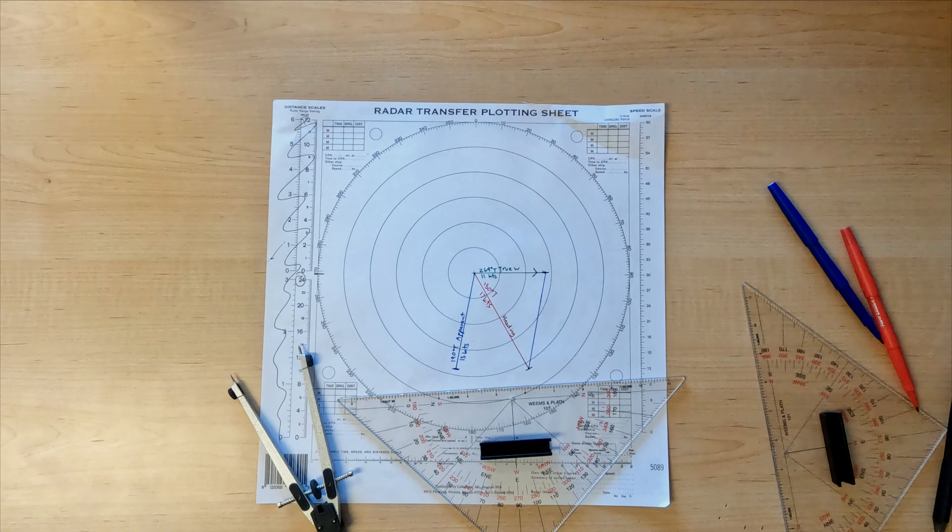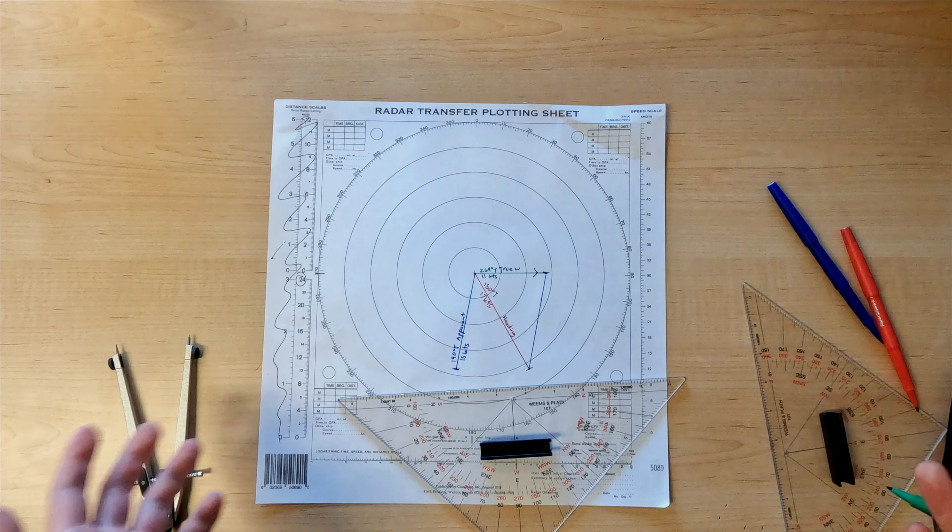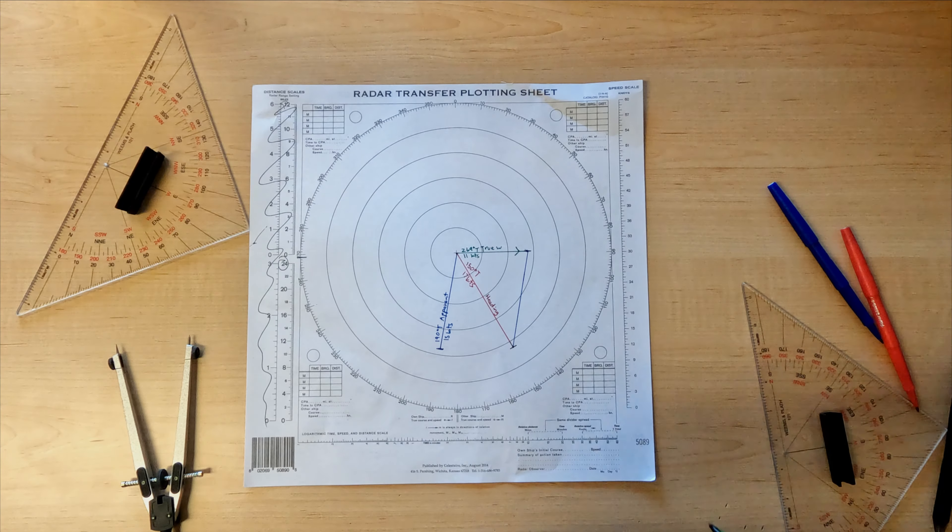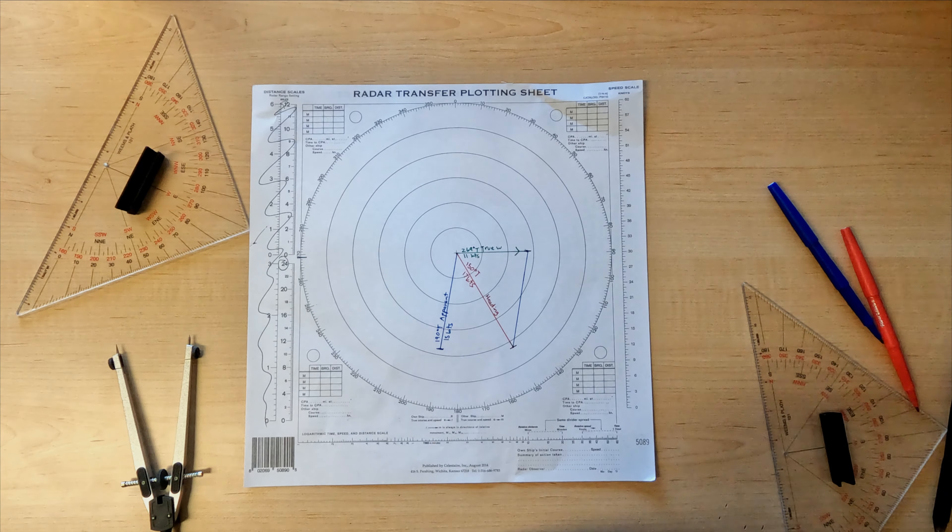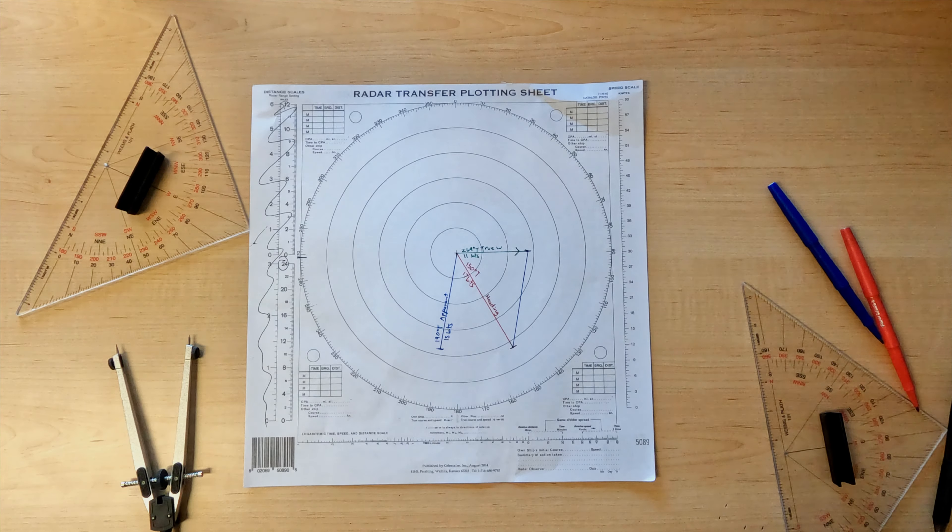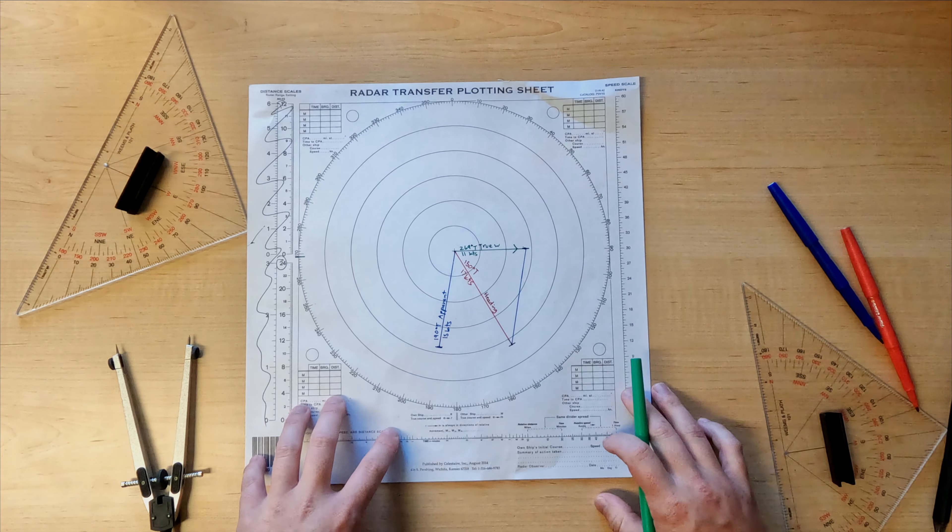About there. And then we're going to have a course of 150. So that's going to be right there. Just measure out how long this is going to be. This is going to go up until here.